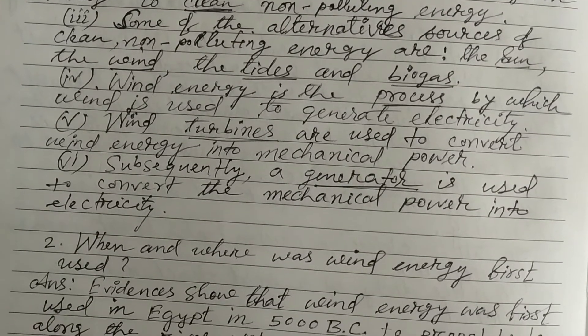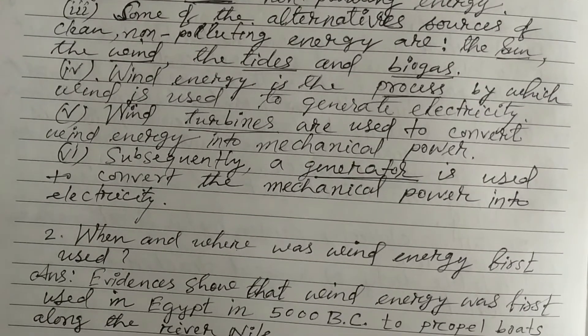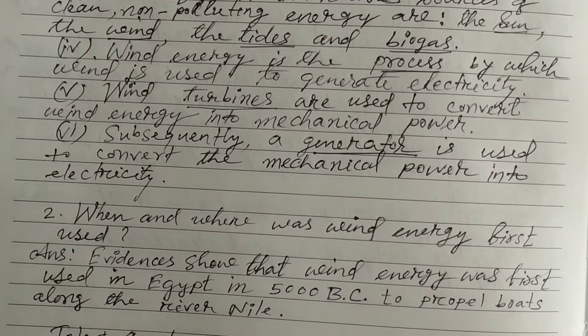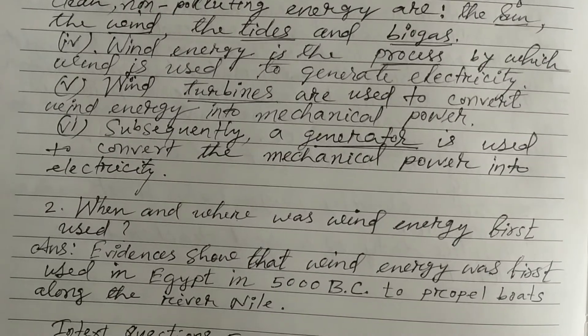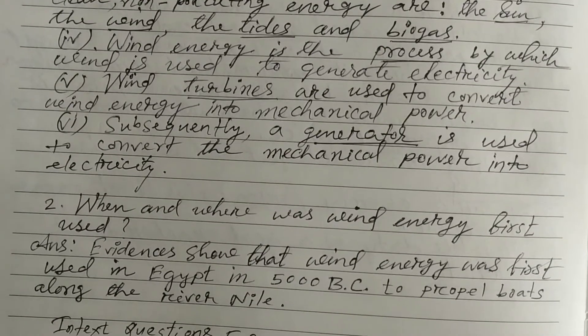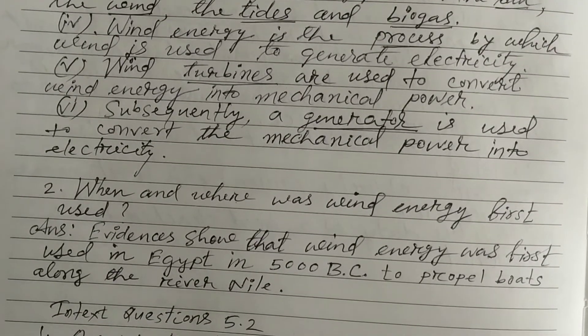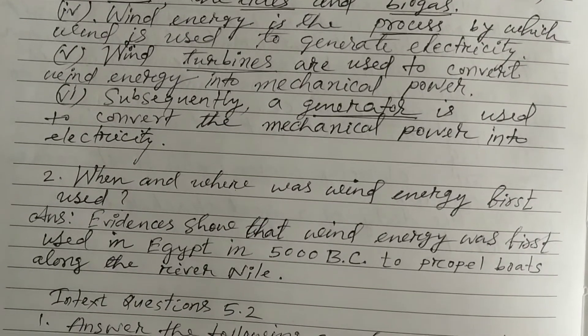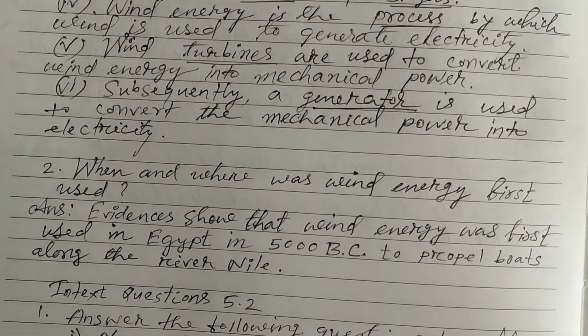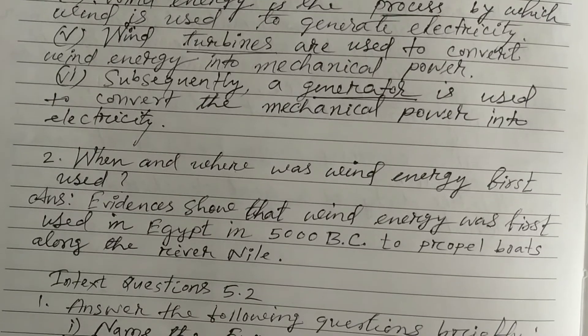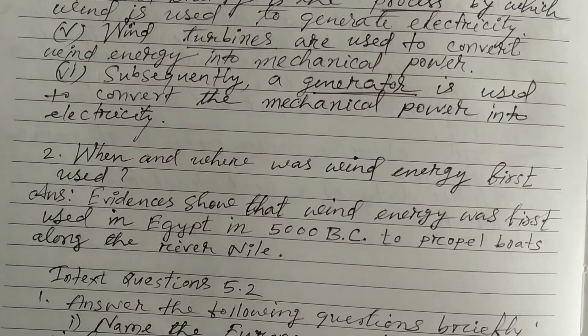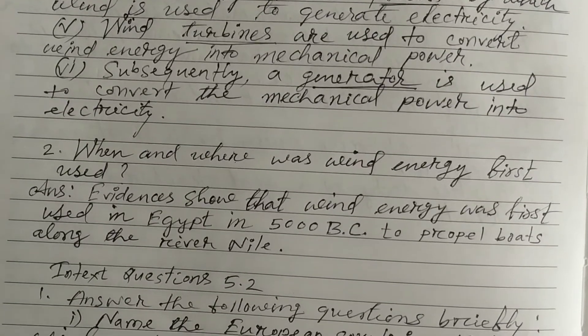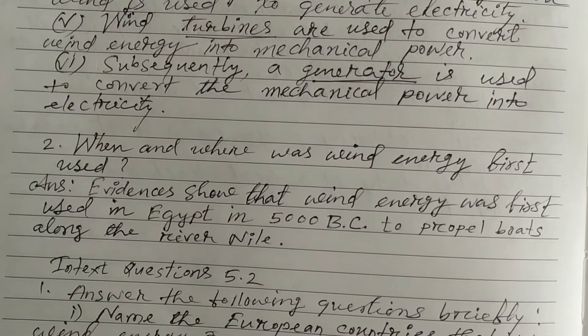Question 2: When and where was wind energy first used? Answer: Evidence shows that wind energy was first used in Egypt in 500 BC to propel boats along the river Nile.